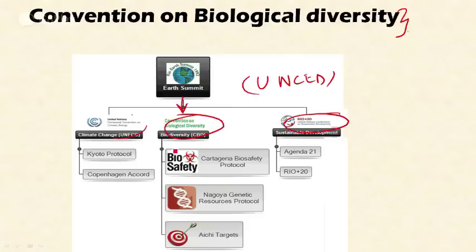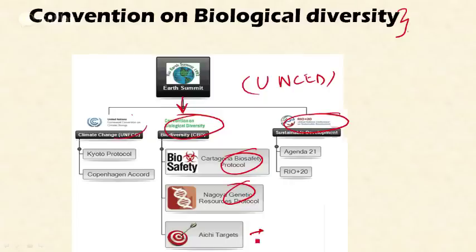Under the Convention on Biological Diversity, we have two important protocols: the Cartagena Protocol on Biosafety and the Nagoya Protocol on Access to Genetic Resources and Benefit Sharing, and one target — the Aichi target — to reduce threats to biodiversity. These three are the sister protocols born out of the Convention on Biological Diversity.